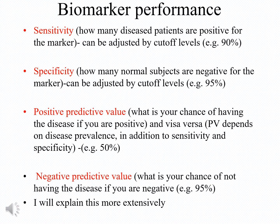Another important attribute is how many of the normal subjects are negative for the disease. Ideally, we want all normal people to be negative, such as a specificity of 100%. But usually this is not the case, because some normal people may show abnormal results.